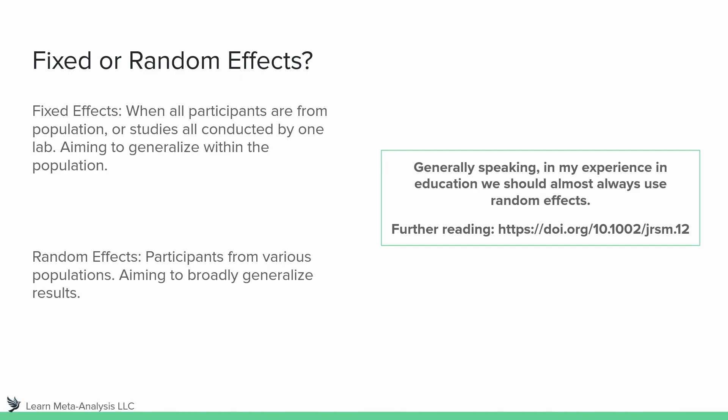As we start talking about meta-analysis, one of the first things we encounter is the terms fixed or random effects. Fixed effects are essentially used — and I'm making this into a simple conceptual understanding here — when all participants are from one population or studies are conducted from one lab, and we're trying to generalize within that specific group. Random effects, on the other hand, are used when participants are from various populations and your goal is to broadly generalize the results. Because of this, in education we almost always use random effects. I see papers published with fixed effects; in some cases they're doing it appropriately, in others they aren't. You need to understand your sample and what each model is actually assuming.